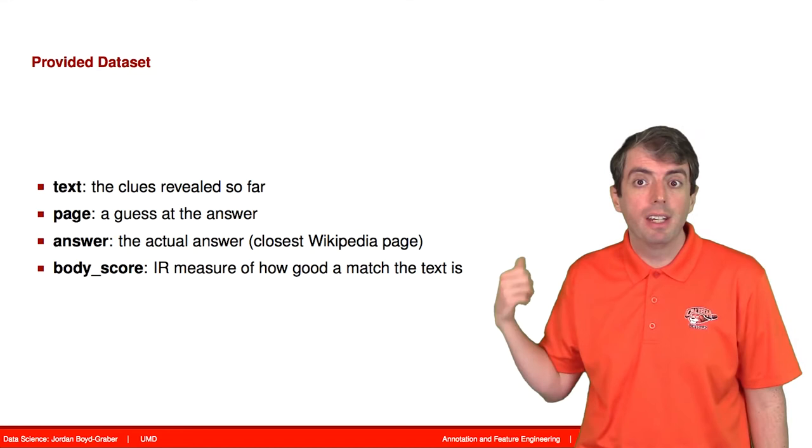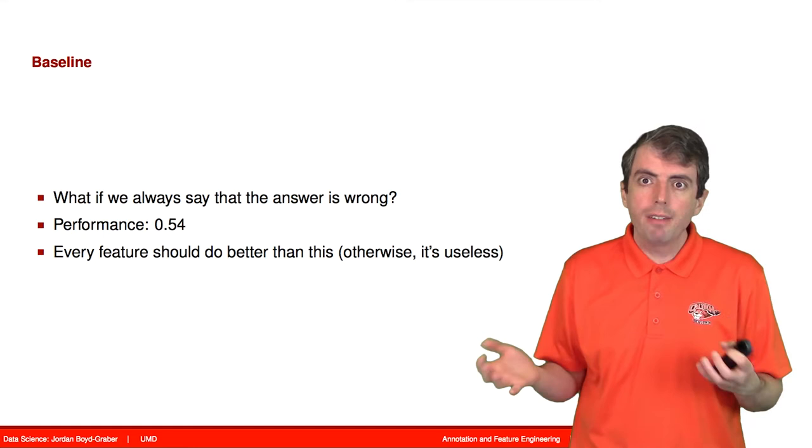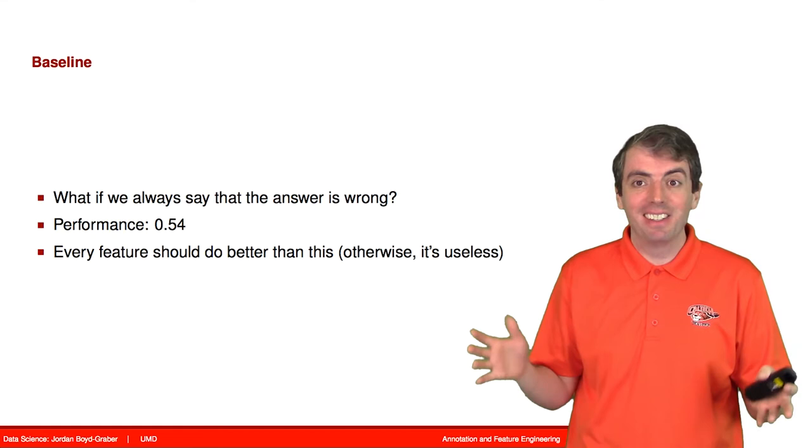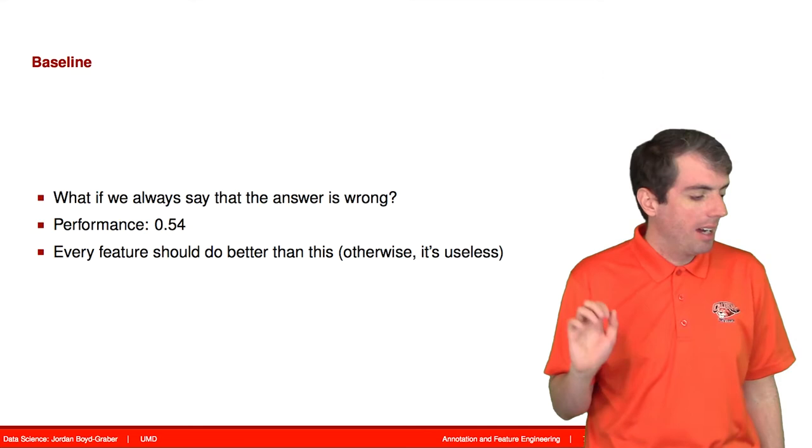Okay. So first, let's start off with a baseline. What if we say that every guess is wrong? And so most guesses are going to be wrong. But if we guess that every guess is wrong, we get a baseline of about 0.54. So everything that we should do should give us something better than 0.54.